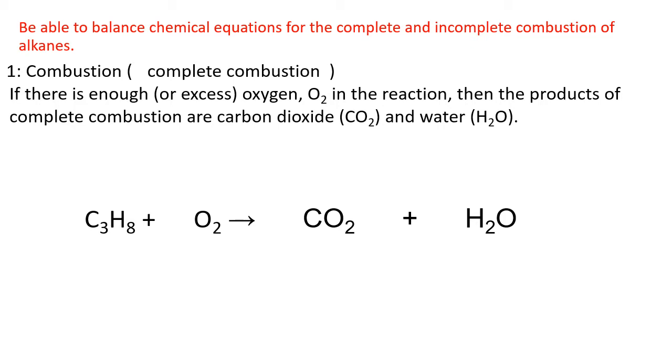There's a trick to being able to quickly balance a combustion reaction. The first point is always balance your carbon atoms first. So no matter how many carbon atoms you have on the left-hand side of your reaction, you must have that number of carbon dioxide molecules on this side. So we can say that we have three carbon dioxide molecules on this side. That's the carbons balanced out.